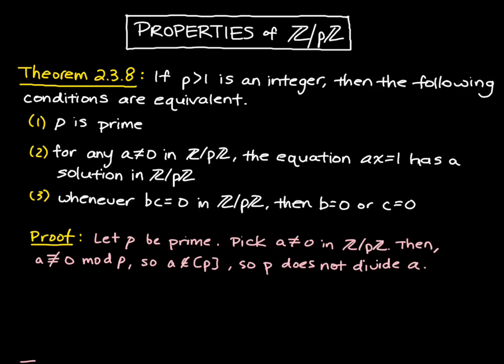So consider the greatest common divisor between p and a. We know that p does not divide a. And whenever we have the GCD of a prime and some other number, we have two options. Either the greatest common divisor is 1 or the prime is a factor of the other number. We just determined that p does not divide a, so we can't have this second case. So this implies that the greatest common divisor of p and a is equal to 1.